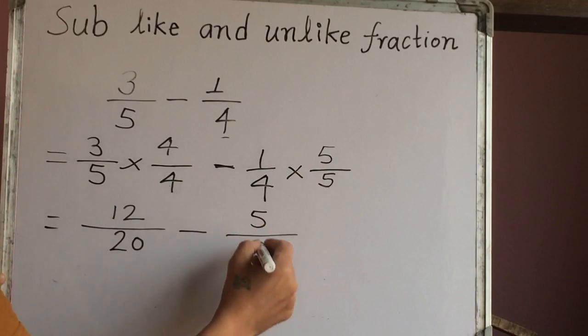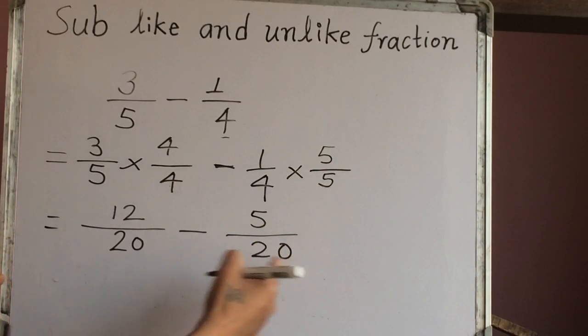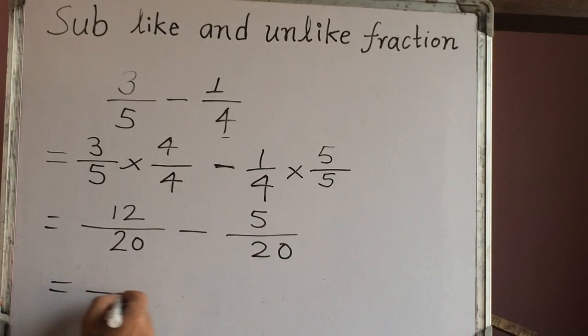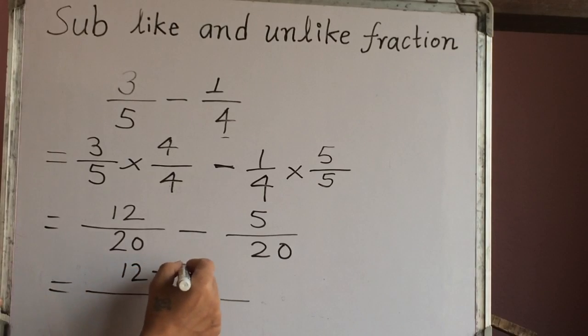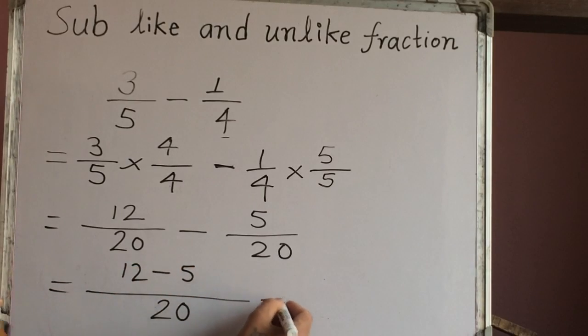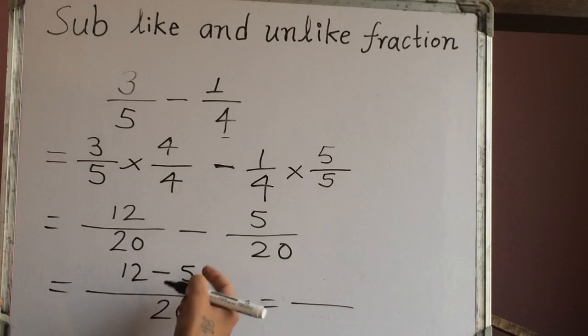Now we have the same denominator, which is 20. So we get 12 over 20 minus 5 over 20.